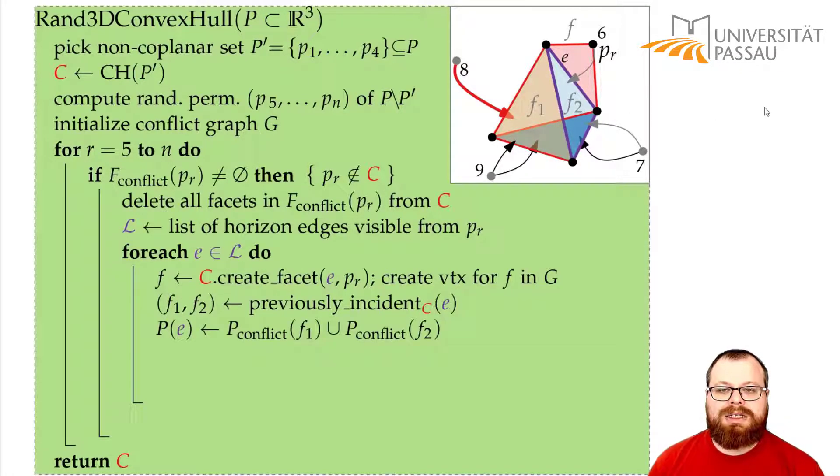Now whatever point sees the new face F also had to see one of those two before. So we look at the conflicts of these two faces in the conflict graph. Those are the candidates, those are the possible points that have a conflict with the new face now. If a point doesn't see either of these two, then it has to lie there somewhere completely else, so it also cannot see F.